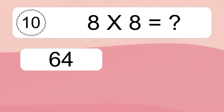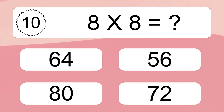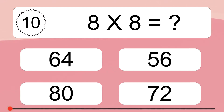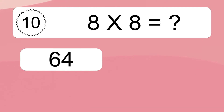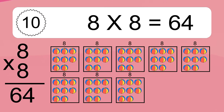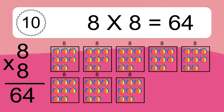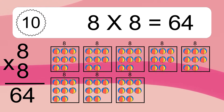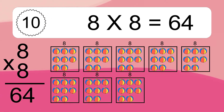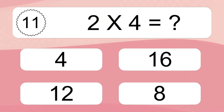8 times 8 equals what? 8 times 8 equals 64. We have 8 boxes and each box has 8 colorful balls inside. If you count all the balls in all the boxes together, you will have 8 times 8 balls. This equals 64 balls.